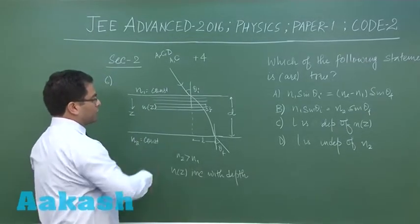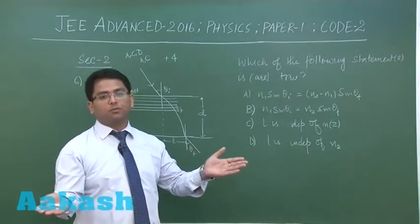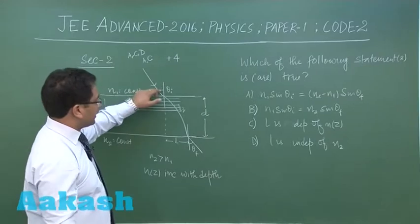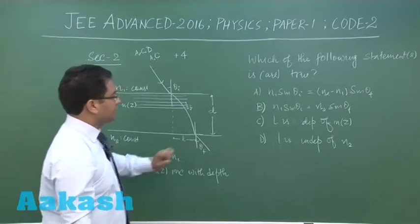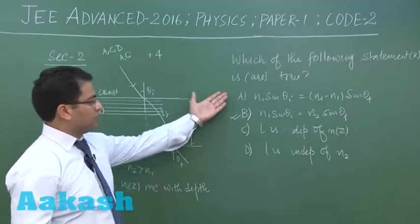Now you could see all the slabs are parallel, and when you have parallel slabs you can always use Snell's law between any two points. So n₁ sin θᵢ would be n₂ sin θf. Based on that, option number B would be correct, so A would be false.